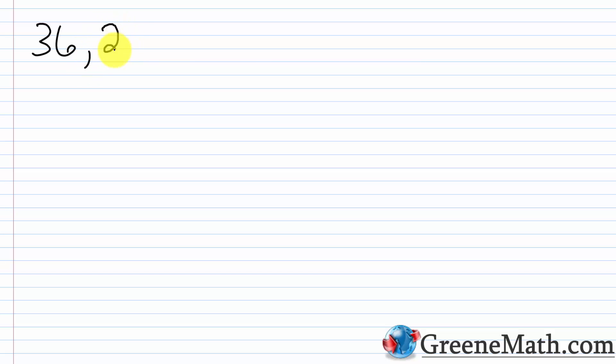Let's look at another one. For the next one, let's write 36,255,927 in expanded notation. Some of you might be wondering where the place value chart is — at some point you have to be able to do this without one. You have to simply memorize the place values. If you can't do that yet, pull out a place value chart, write this number into it to get the place value for each digit, and then continue with me.